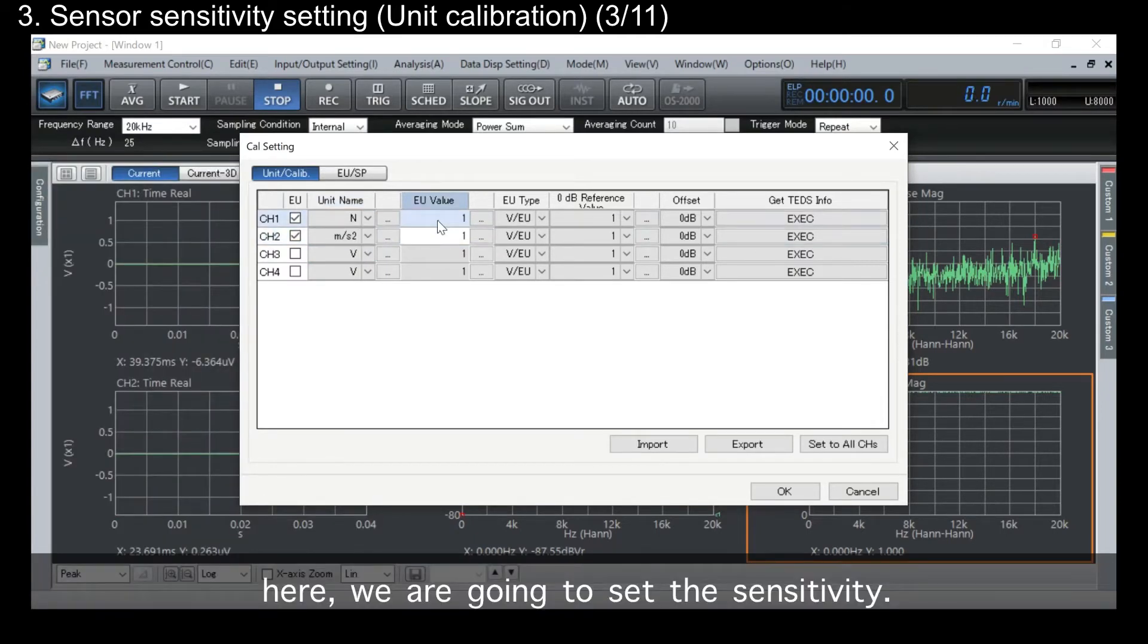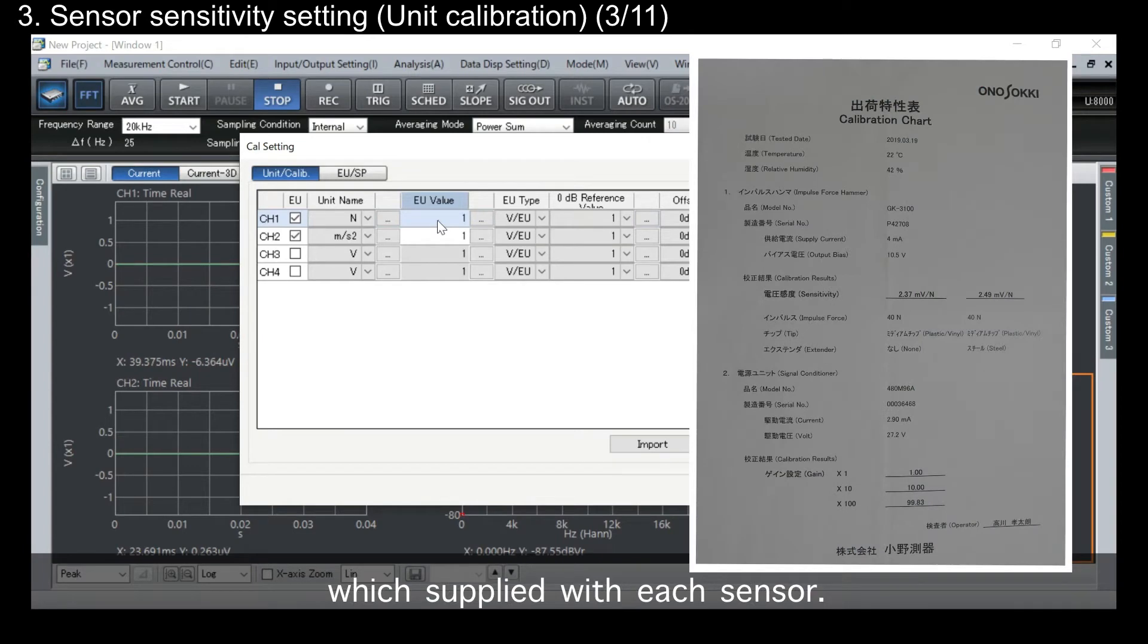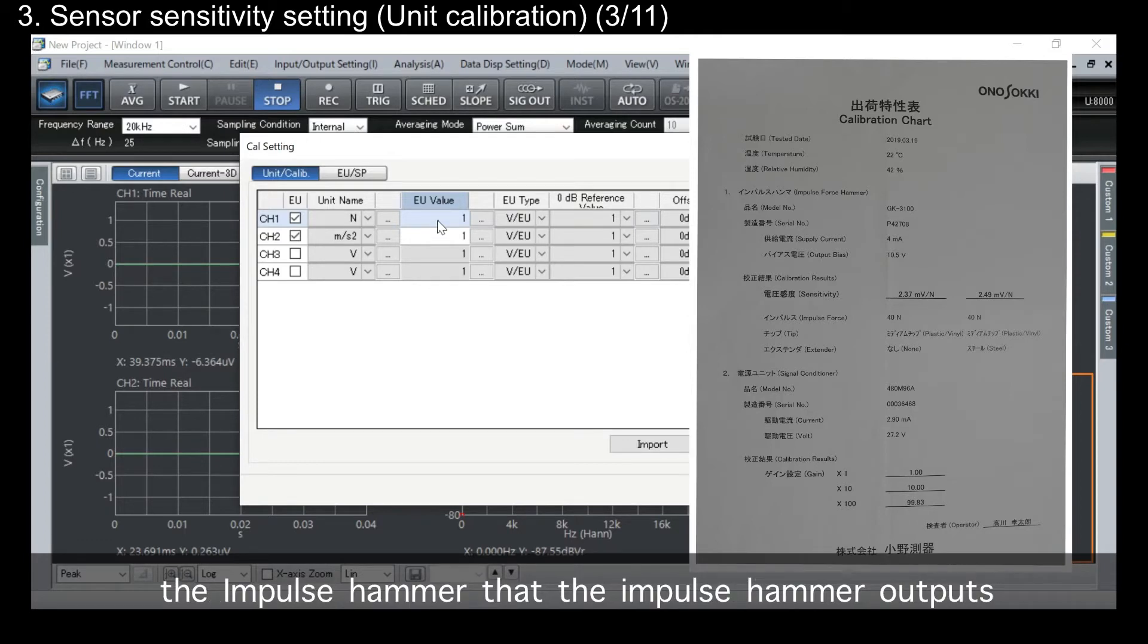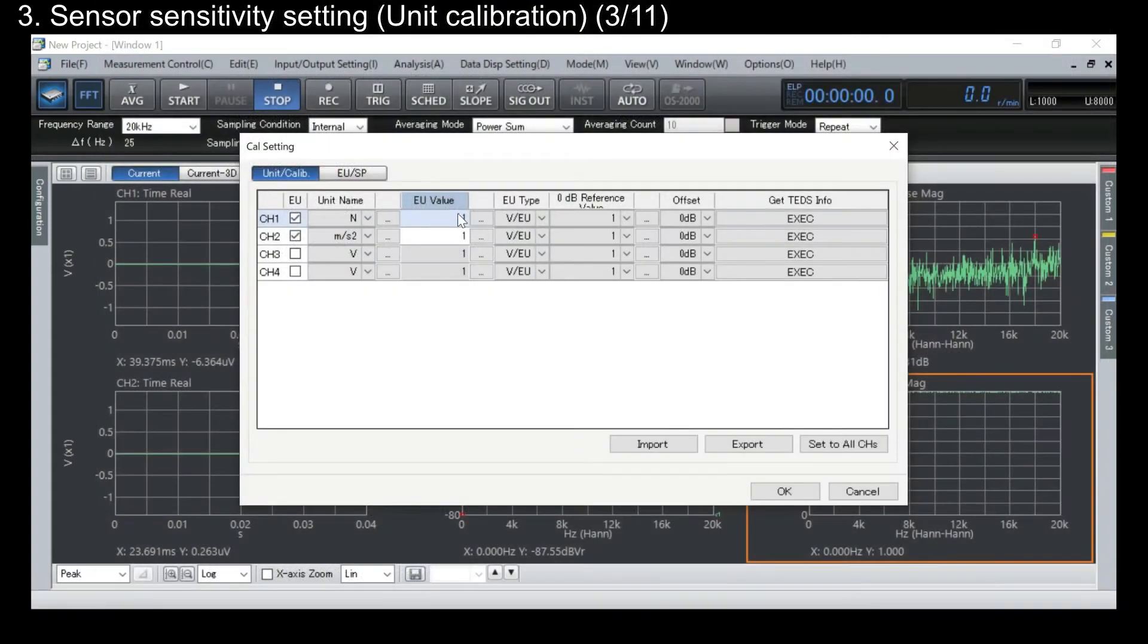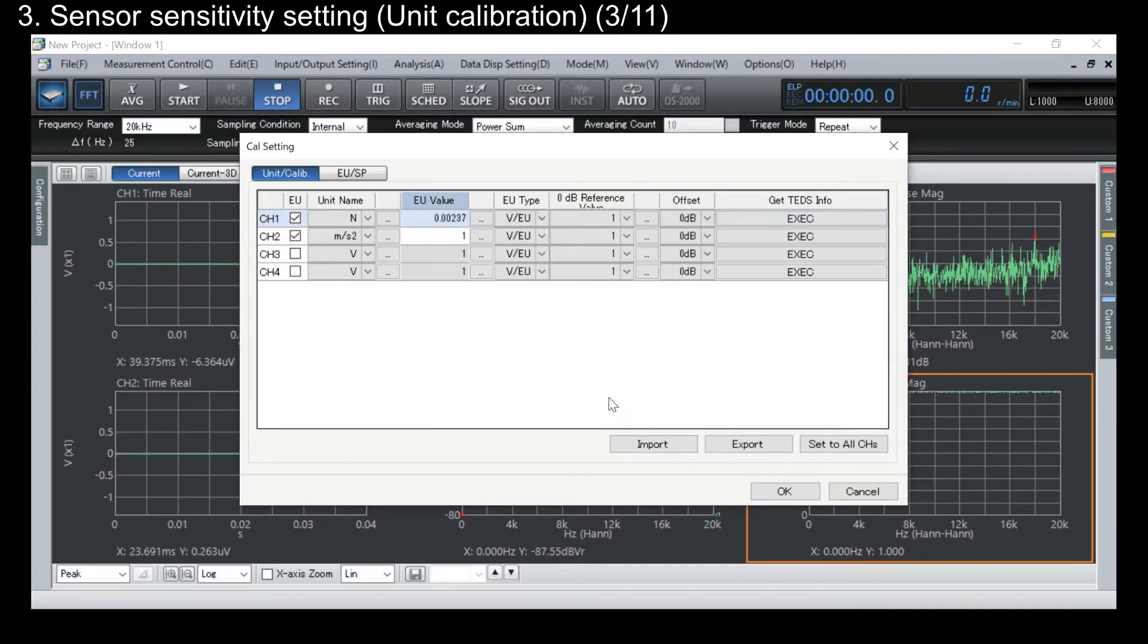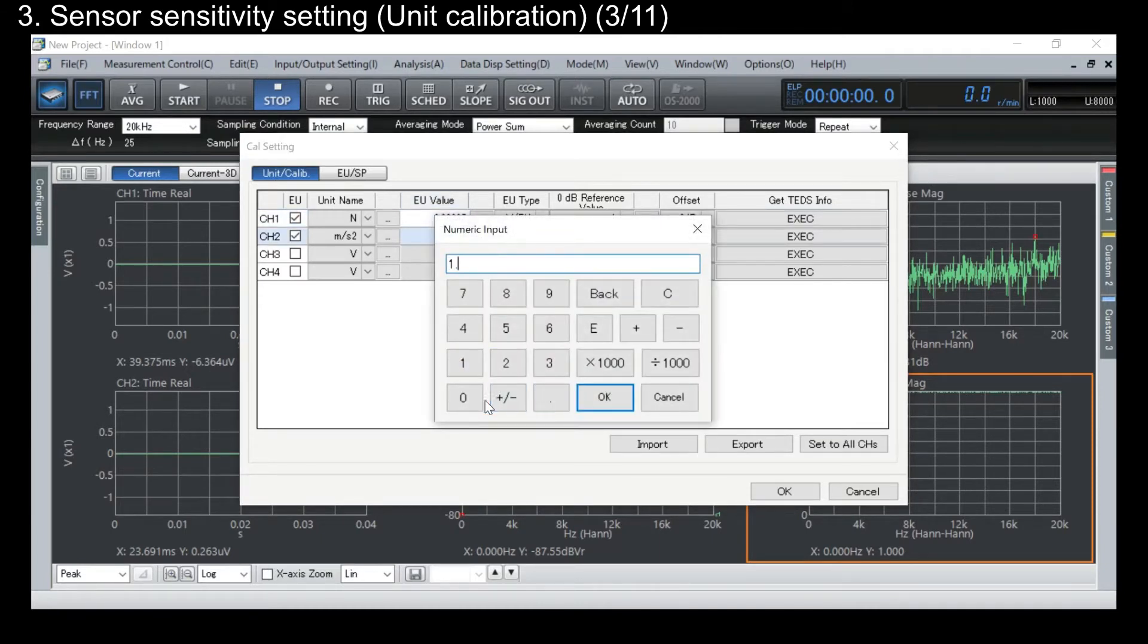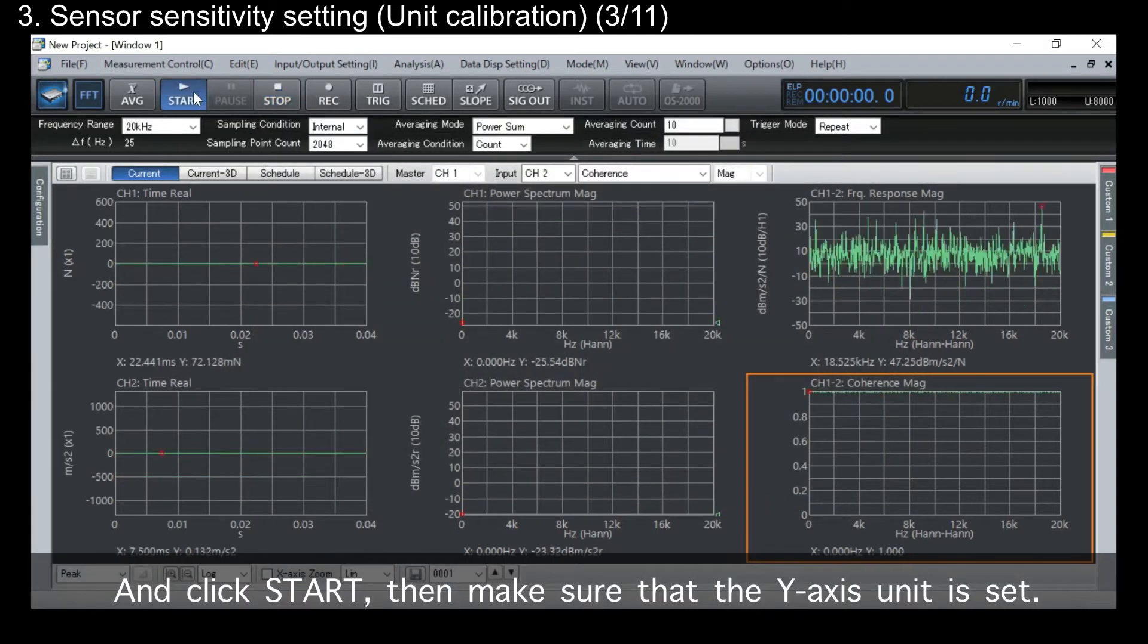And here, we're going to set the sensitivity. The sensitivity value is described in the calibration chart which is applied with each sensor. For example, you will see at the calibration chart of the impulse hammer that the impulse hammer outputs a voltage of 2.37 millivolts per Newton. So, enter this value in the software. And click start, then make sure that the Y axis unit is set.